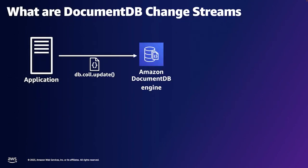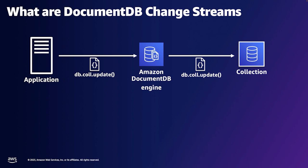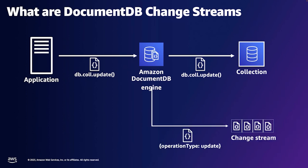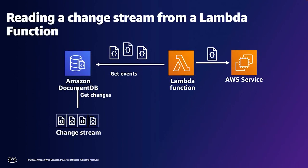Change streams are populated whenever you send a change to your data. For example, when you're updating a collection, the data gets modified in the storage layer, and change streams also get accumulated in the storage layer. Keep in mind, change streams do incur IO and storage. They are not enabled by default — you have to enable them at the per-collection level, though you can do it for all collections. Keep in mind the cost aspect, and change streams can be retained up to seven days, with a default of three hours. Once that's done, you can use Lambda functions to read those change streams.